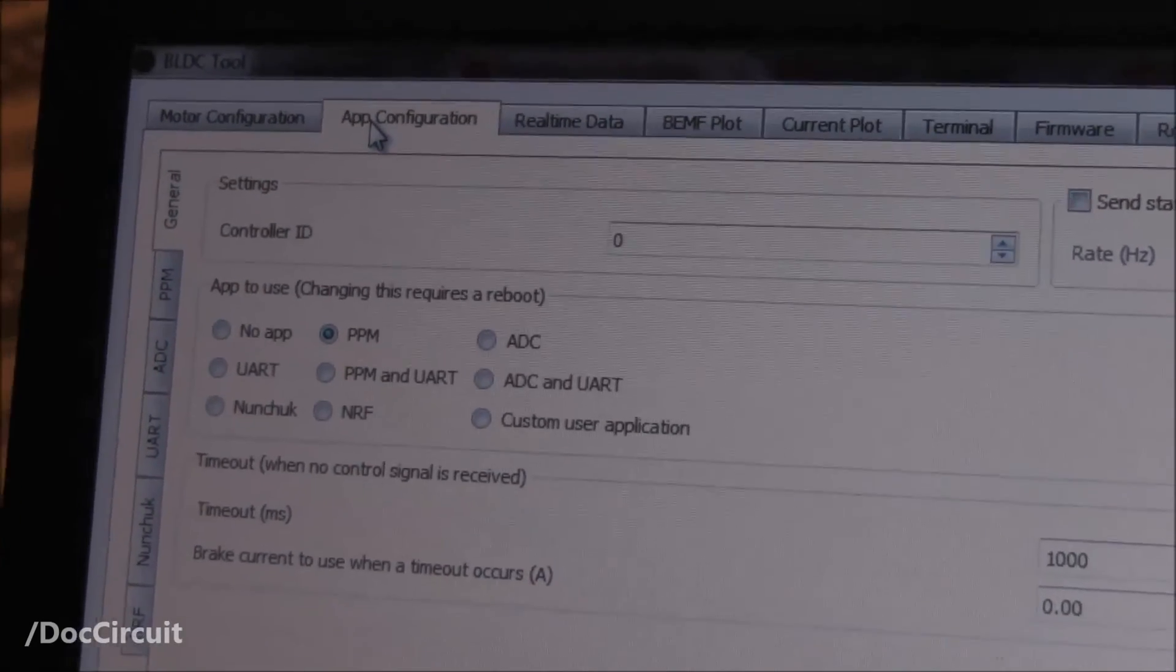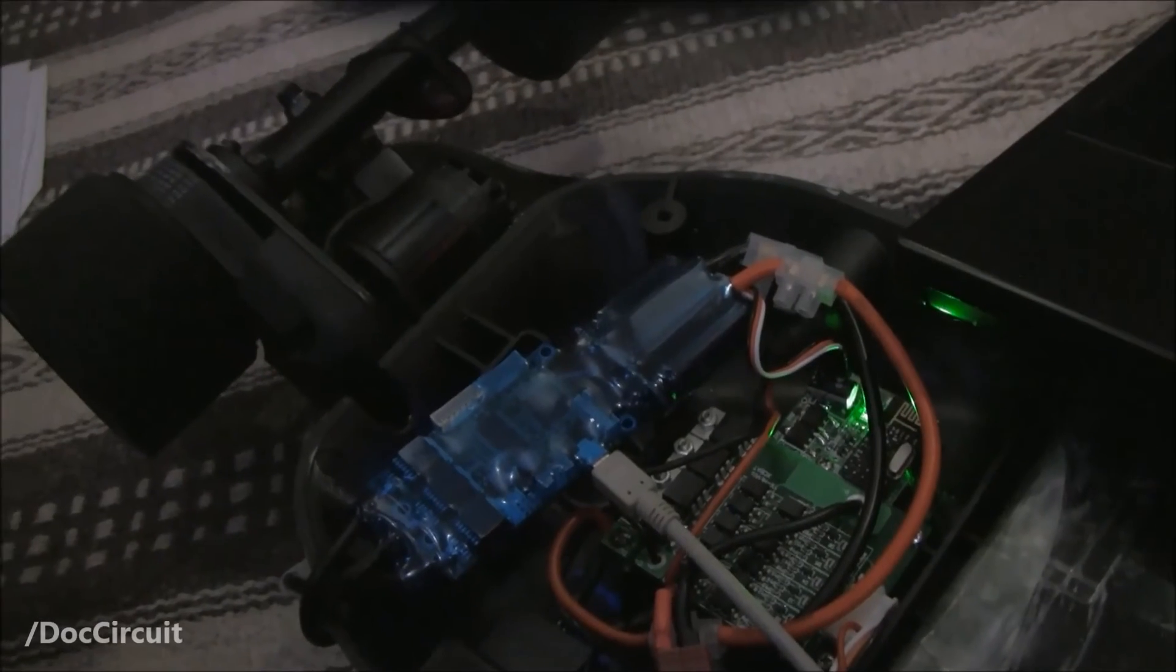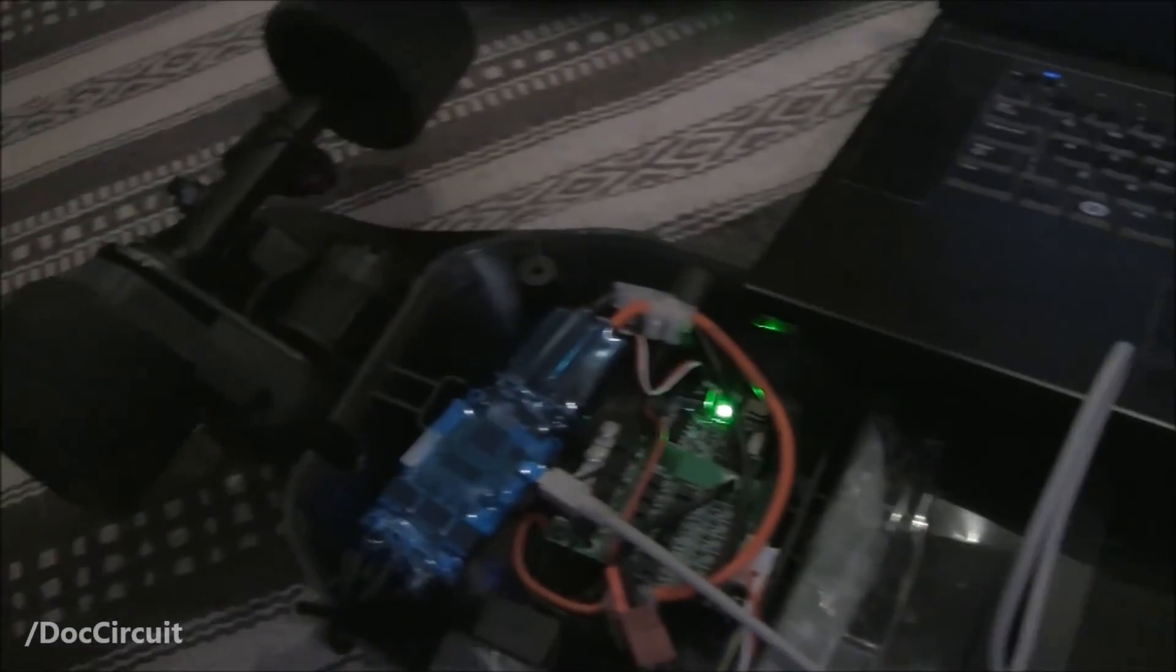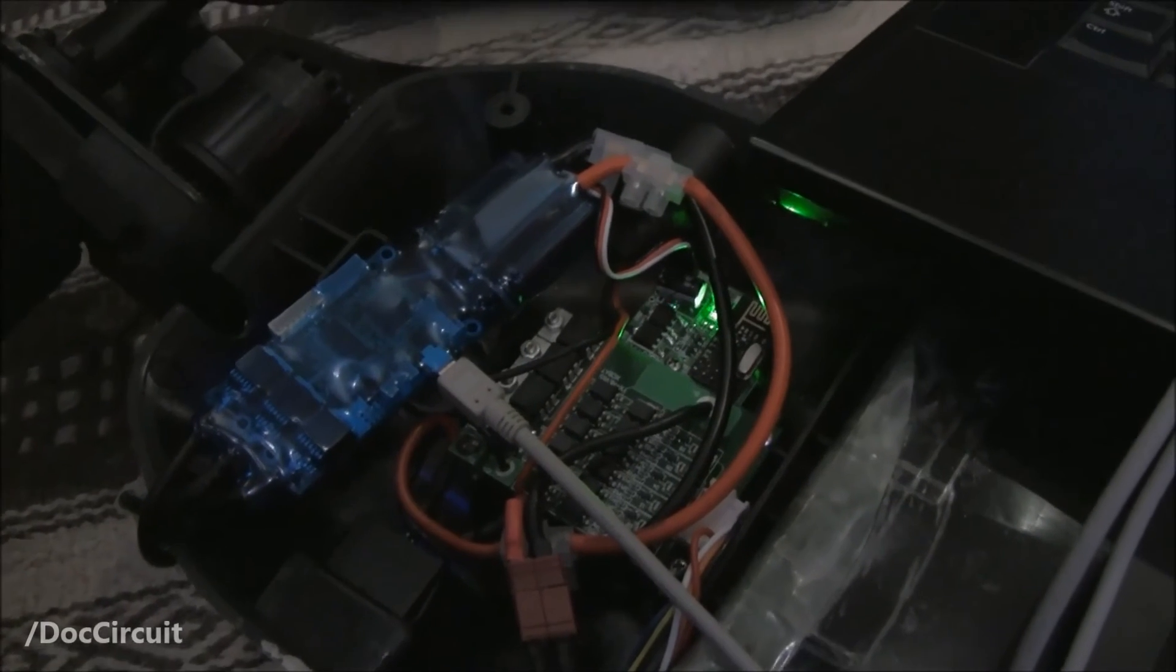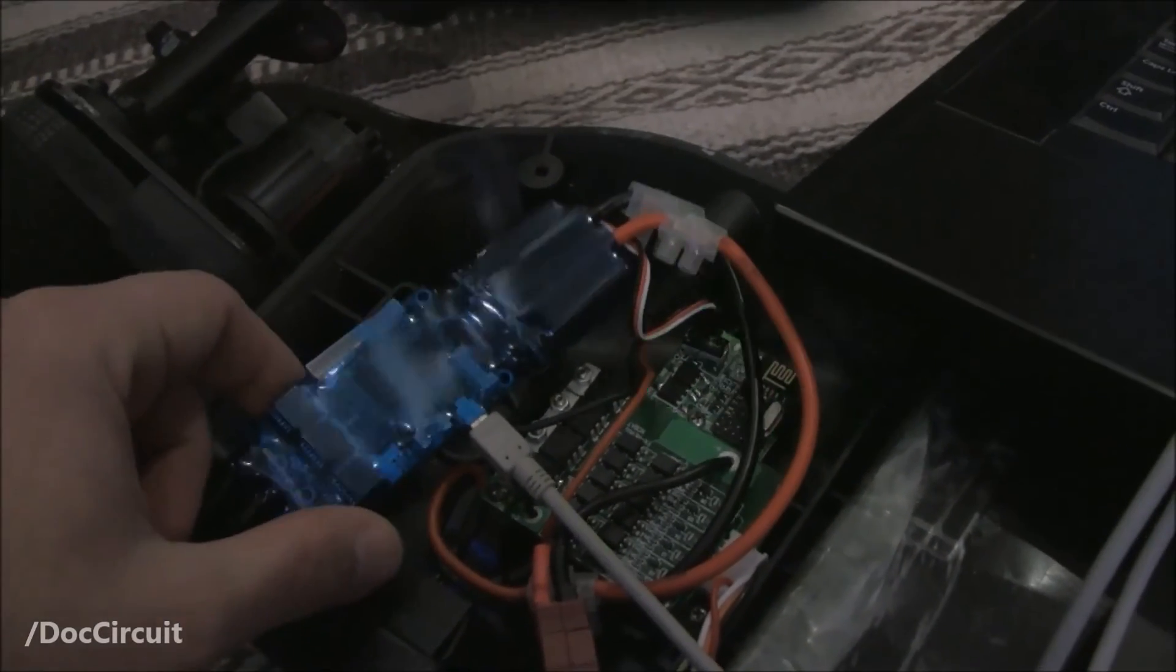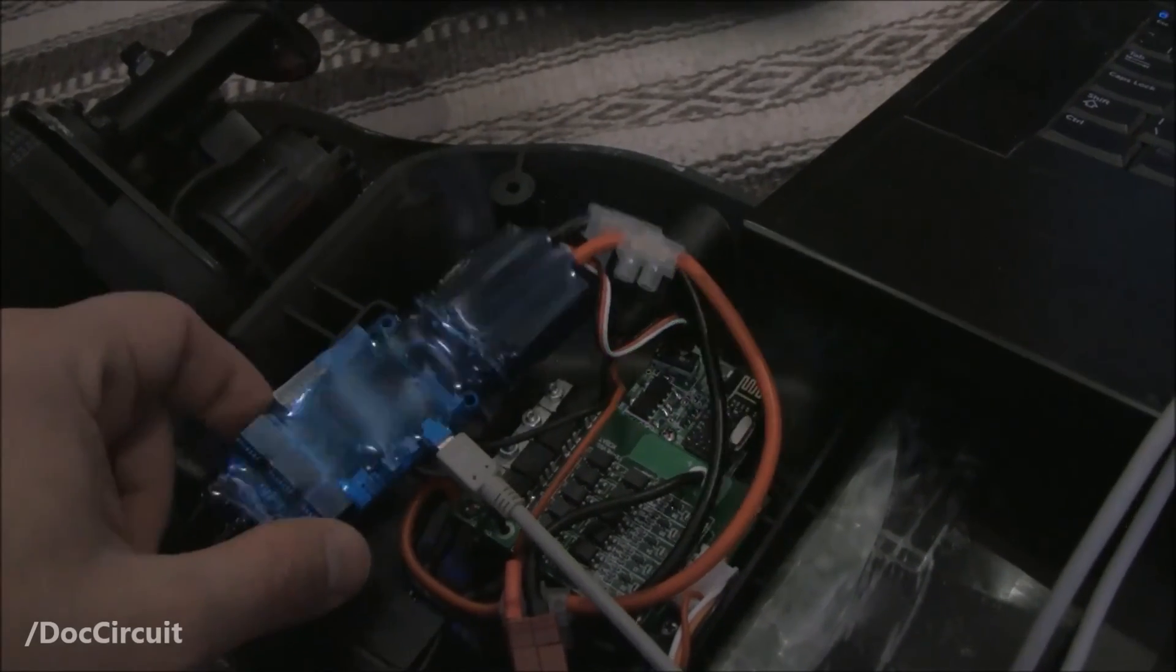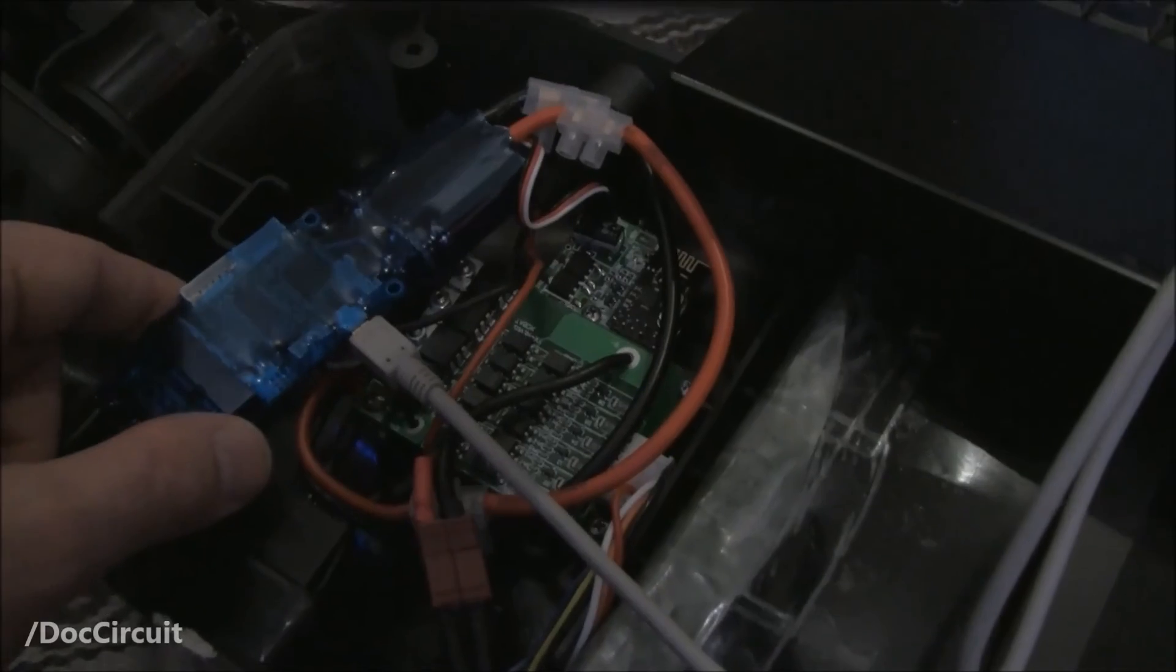With the introduction of that one component, a VESC, you can take a Chinese clone electric longboard and transform it. Those two weak points, the speed controller and BMS, are solved. The speed controller is replaced, which means the braking is better, acceleration is better, it can do standing starts, and reliability is improved, and it seems to protect the BMS.